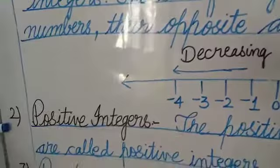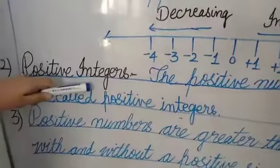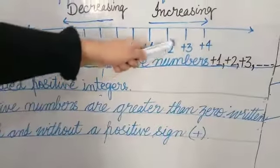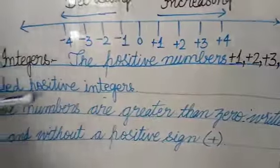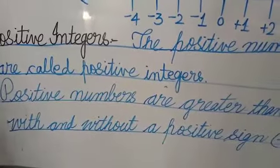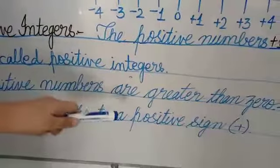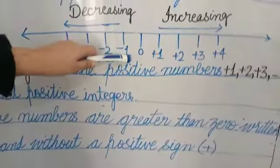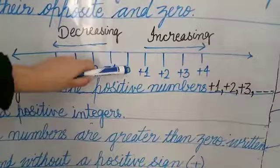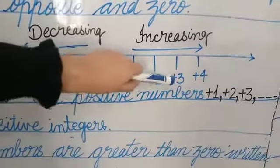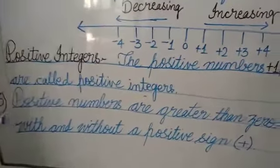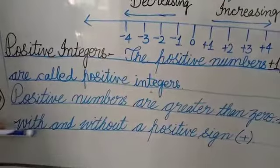Point number two: what are positive integers? The positive numbers on this number line — plus one, plus two, plus three, plus four — these numbers are the positive integers. Point number three: positive numbers are greater than zero. This is zero, and plus one, plus two, plus three, and plus four — these are the positive numbers and positive numbers are always greater than zero.